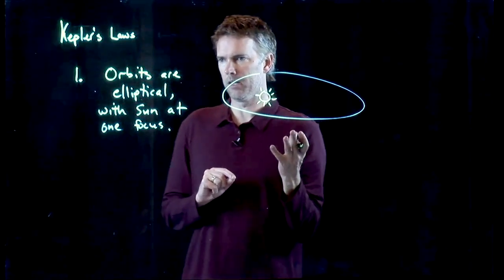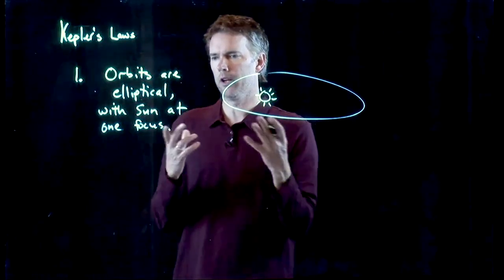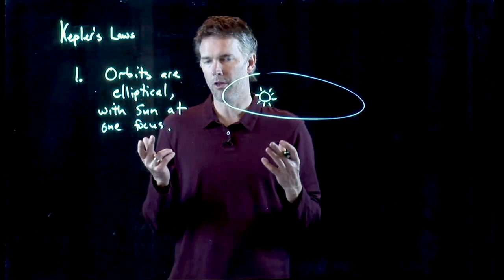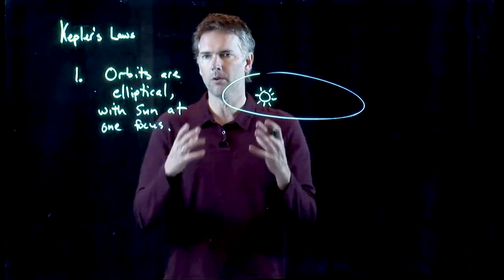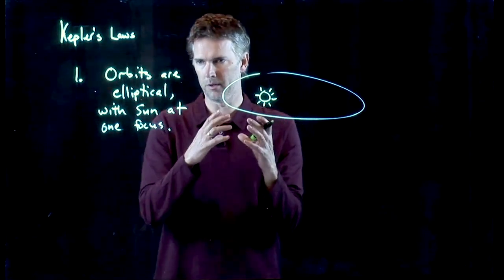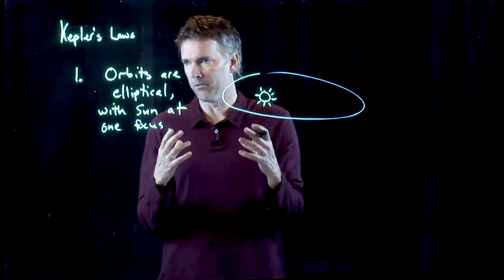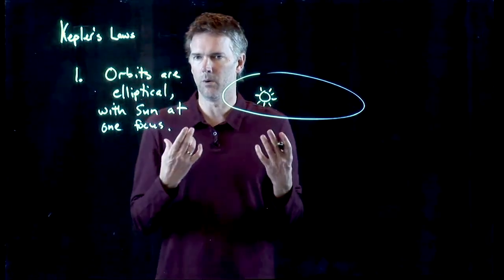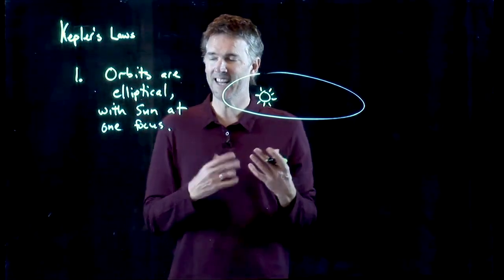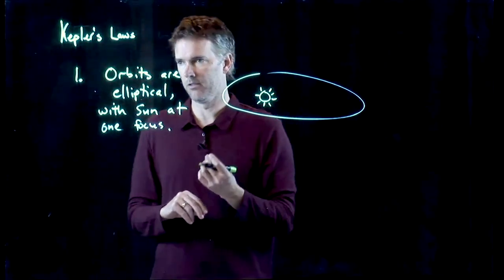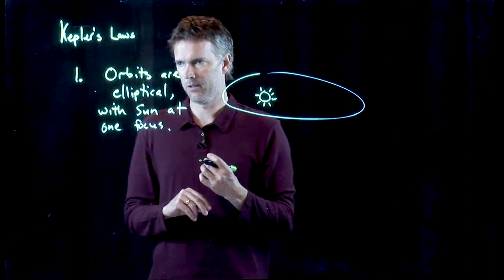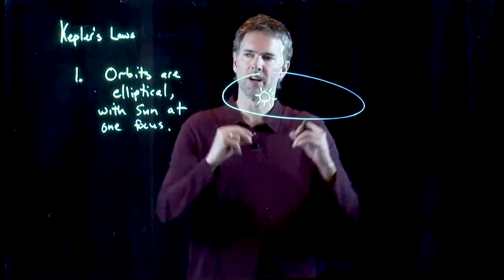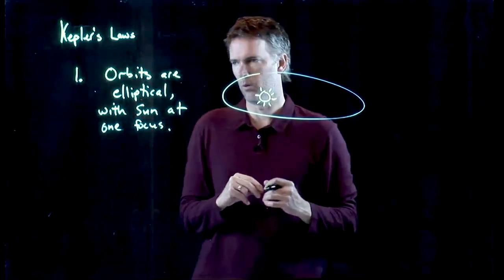This is a big step because earlier Tycho Brahe and other people thought that orbits were circular. The reason they thought so is because when you look at the orbit of the Earth around the Sun, it is nearly circular. But other planets have much more eccentric orbits.